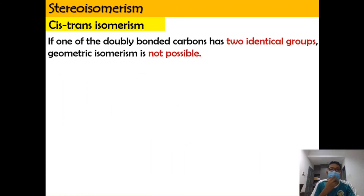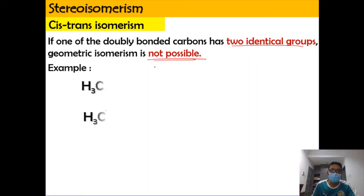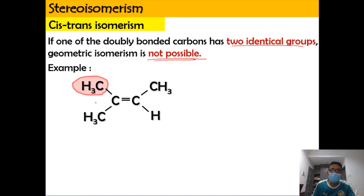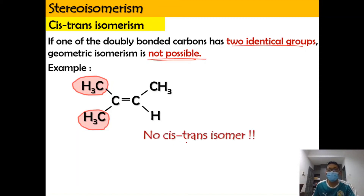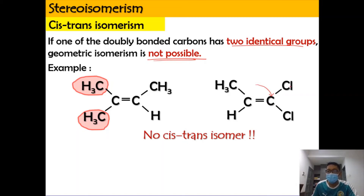However, if one of the doubly bonded carbons has two identical groups, geometric isomerism is not possible. For example, if the carbon on the double bond has two identical groups attached, there will be no cis-trans isomers for that compound.